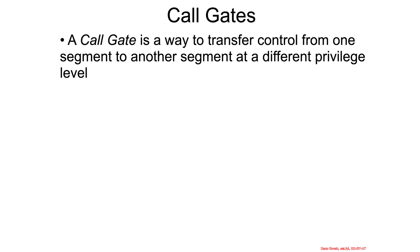In the previous video, I left you hanging with the mystery van having made an appearance, and I said that there's no way to just set the CS, the code segment register. You can't do a move instruction, and you can't just do a pop instruction. So how can you, practically speaking, transition from ring 3 to ring 0?